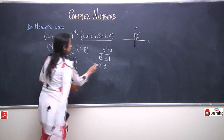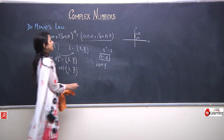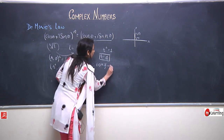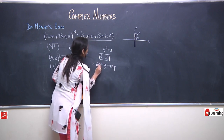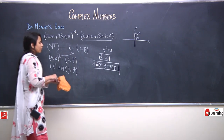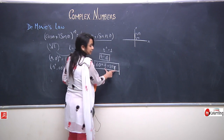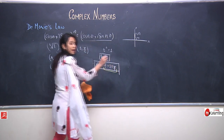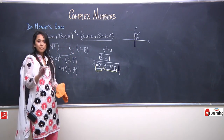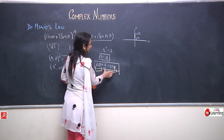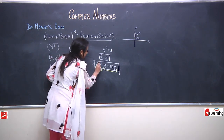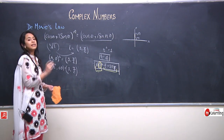Now, 6 theta need not be just pi by 2. It can be 5 pi by 2, 9 pi by 2, 13 pi by 2 — that is, it can be of the form pi by 2 plus 2n pi. So whenever I increase the right-hand side by a factor of 2 pi (360 degrees), my theta increases by a factor of pi by 3 (60 degrees).